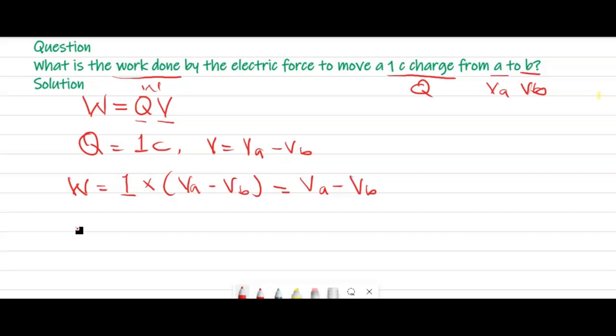Therefore we have the work done is equals to voltage across A minus voltage across B. The voltage is the potential difference between A and B. Therefore this is the final answer for this question.